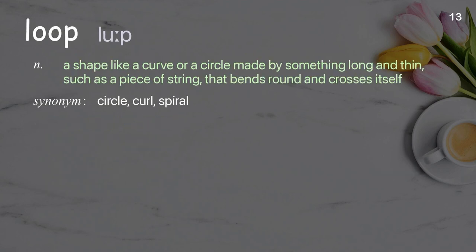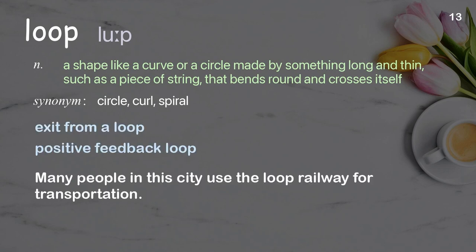Loop: a shape like a curve or circle made by something long and thin, such as a piece of string, that bends round and crosses itself. Examples: exit from a loop; positive feedback loop; many people in this city use the loop railway for transportation.